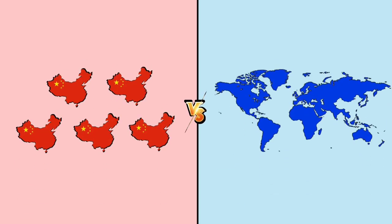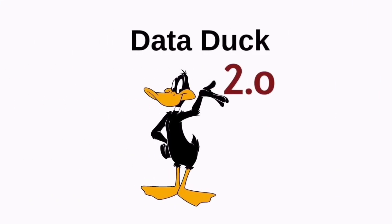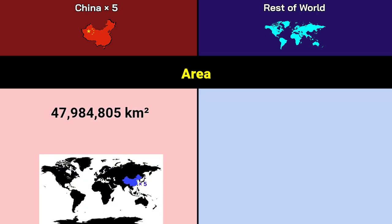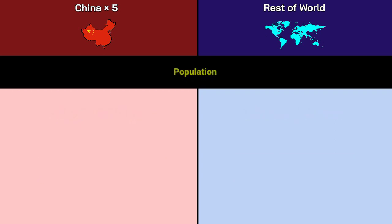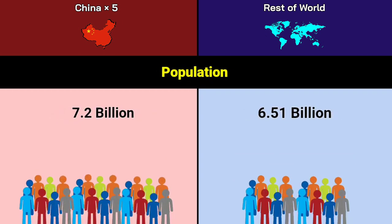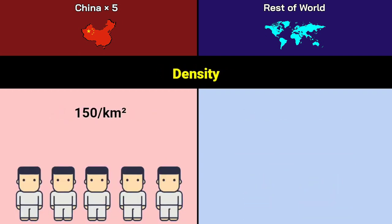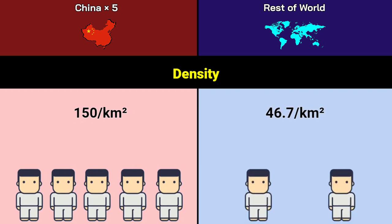Hello guys, today we see China versus Rest of World. Welcome to the YouTube channel Data Duck 2.0. Area: China 47.98 million square kilometers, Rest of World 139.34 million square kilometers. Population: China 7.2 billion, Rest of World 6.51 billion. Density: China 150 per square kilometer, Rest of World 46.7 per square kilometer.